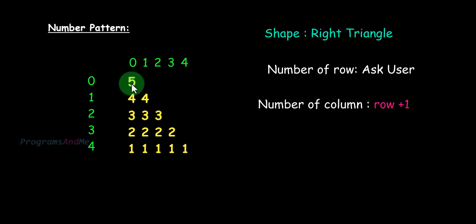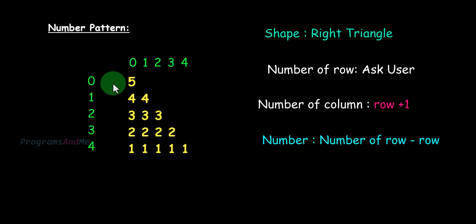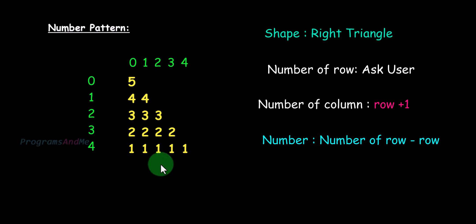Now what is 5 here? Here 5 is the number of rows in the output — so when the user enters number of rows as 5, we get this output. If I subtract the row number from the number of rows: number of rows is 5, row number is 0, so 5 minus 0 gives 5. Row number 1: 5 minus 1 gives 4. 5 minus 2 gives 3, 5 minus 3 gives 2, 5 minus 4 gives 1.